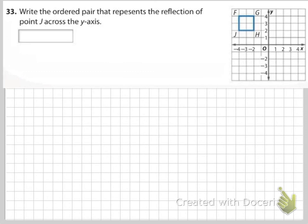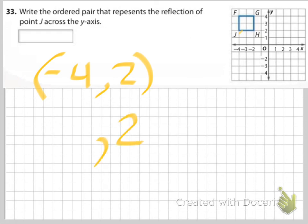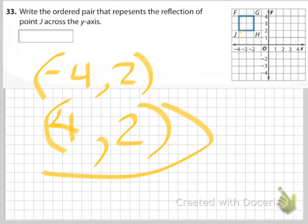Write the ordered pair that represents the reflection of point J. J is at negative 4 comma positive 2. Reflected across the y-axis, the y stays the same and the x is the opposite — so the reflected point is 4 comma positive 2.